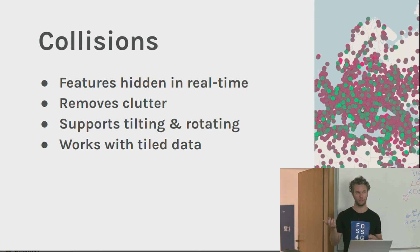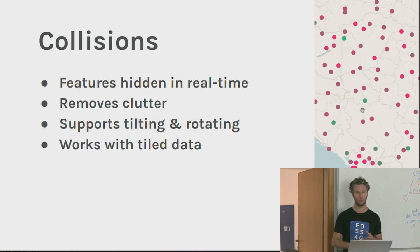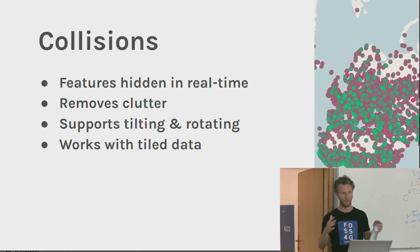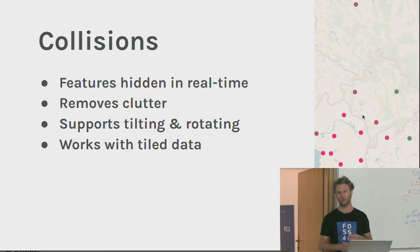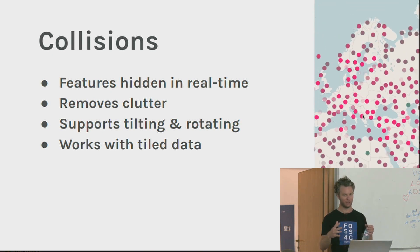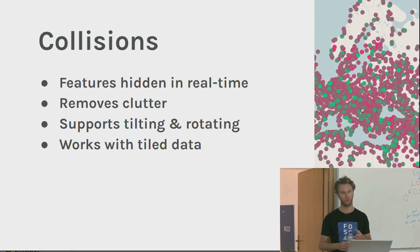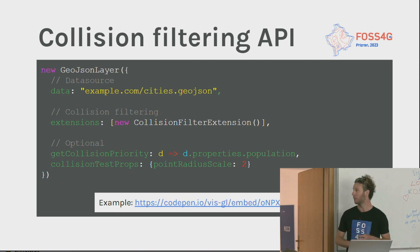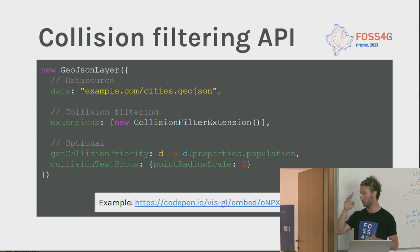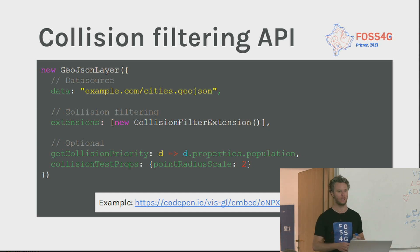One of the really nice things about doing this on the GPU is that it works with tiled data. A lot of web maps load data by tiles as you zoom in. Trying to do collision avoidance on data coming from different sources as the map is changing and rotating is basically impossible to do in JavaScript in real time. How hard is this to implement in an application? It's actually very easy — you just add one line of code, the collision filter extension, and it will automatically do this collision avoidance for you on any layer.